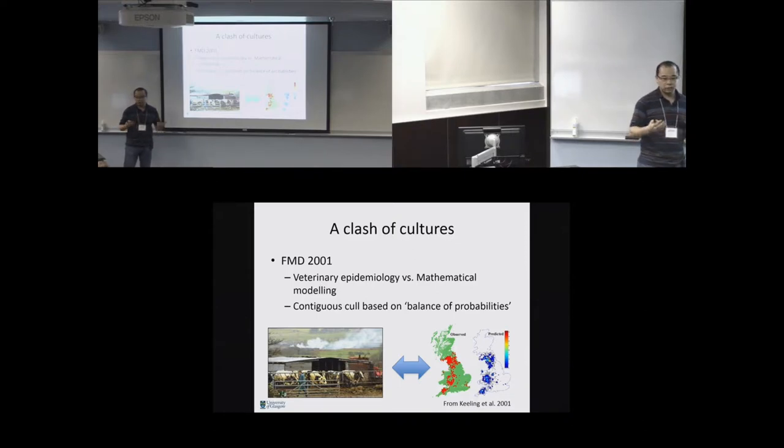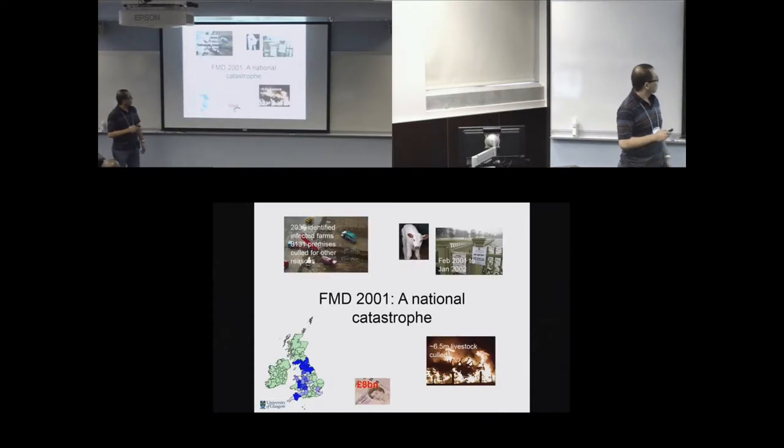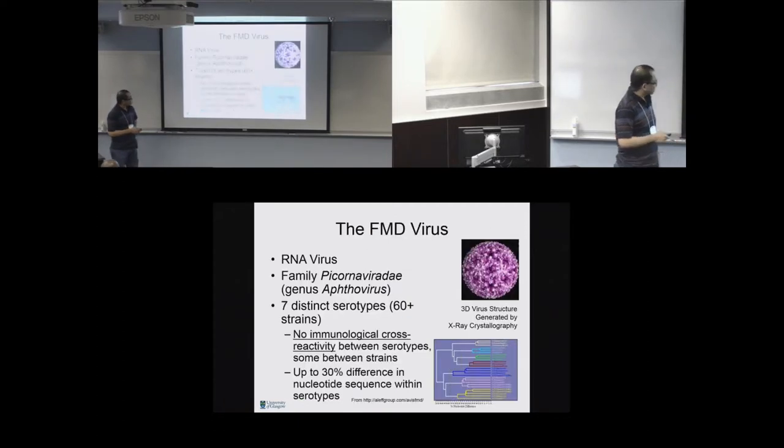And one of the examples of this problems is the 2001 foot and mouth disease epidemic, where there's an enormous clash of cultures between the traditional epidemiologists and the mathematical modelers. Now, I think we've come a long way since that. We've got people sitting in here in this room talking together before outbreaks about how we can bring these philosophies together. But this is one example where that didn't work. It was a national catastrophe in Britain, cost an estimated eight billion plus pounds to control, over 6.5 million livestock were culled. Lots of knock-on effects. I'm not going to go into all the details over here.